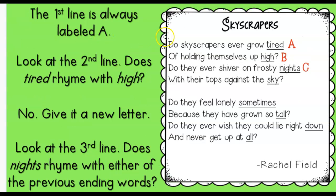Let's look at something else — this is Skyscrapers. And again, this is not going to be ABAB or AABB. It's going to be something different. So let me read the poem first. 'Do skyscrapers ever grow tired of holding themselves up high? Do they ever shiver on frosty nights with their tops against the sky?' That's one stanza. The first thing you do is you go and underline every last word in every stanza.